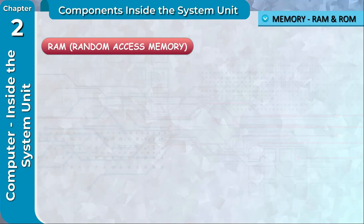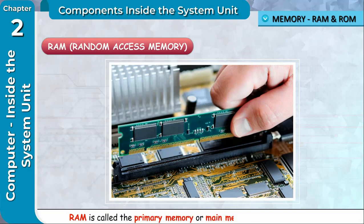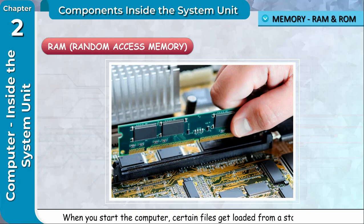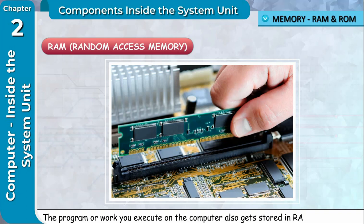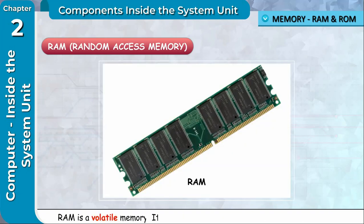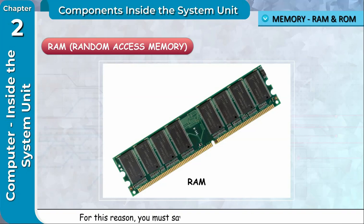RAM (Random Access Memory) is called the primary memory or main memory that stores data and instructions temporarily in the computer. When you start the computer, certain files get loaded from a storage device such as a hard disk into RAM. These files remain in RAM as long as the computer is running. RAM is a volatile memory — it loses its contents when the power is switched off. For this reason, you must save all items you may need in the future. Saving is the process of copying data from RAM to the hard disk.